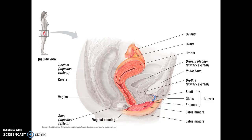One thing to notice that's distinct from the male reproductive system is the location of the urethra. The urethra is the connection between the urinary bladder and the exterior of the body. In the female reproductive system, the urethra is entirely distinct and not connected to the reproductive system. As we'll see in the male reproductive anatomy, the urethra is shared both with the urinary system and the reproductive system.